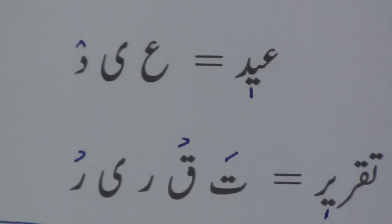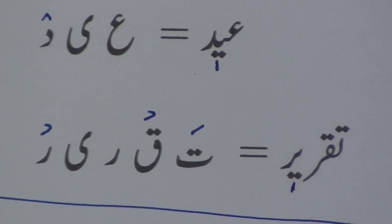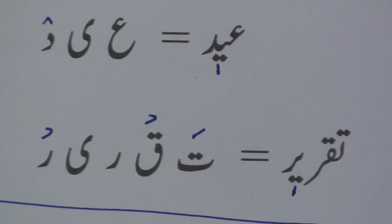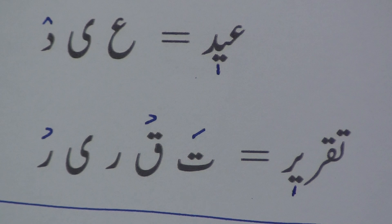The next word is: teh zabar teh gives 'ta,' and kaaf with jazm — meaning no vowel is attached to kaaf — gives 'taq.' Then reh with chhoti yee gives 'reer.' Together: 'Taqreer.' Taqreer means 'lecture.'